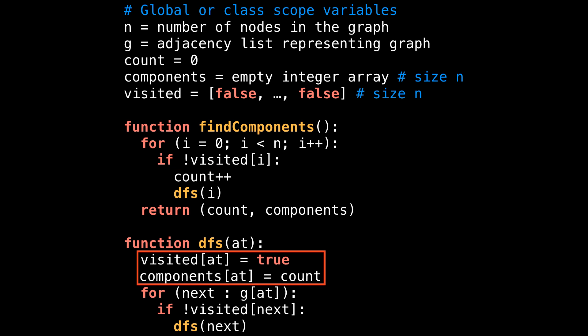Inside the depth first search method itself, the two things we do are mark the current node as visited and set the current node to be part of the component equal to the value of count. Then simply iterate over every neighboring node that has not yet been visited and call the depth first search method to explore them as well. Back inside the find components method, simply return the number of components and the components array that contains the information about which component each node belongs to.